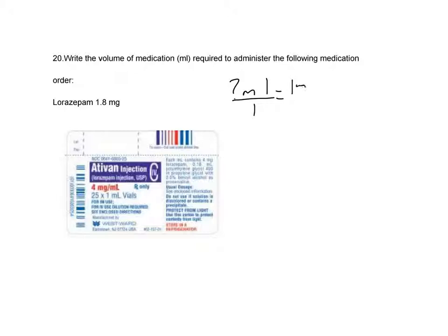So 1 milliliter over 4 milligrams times our ordered dose, 1.8 milligrams. And we'll just put that over 1 to keep the numerators and the denominators straight.